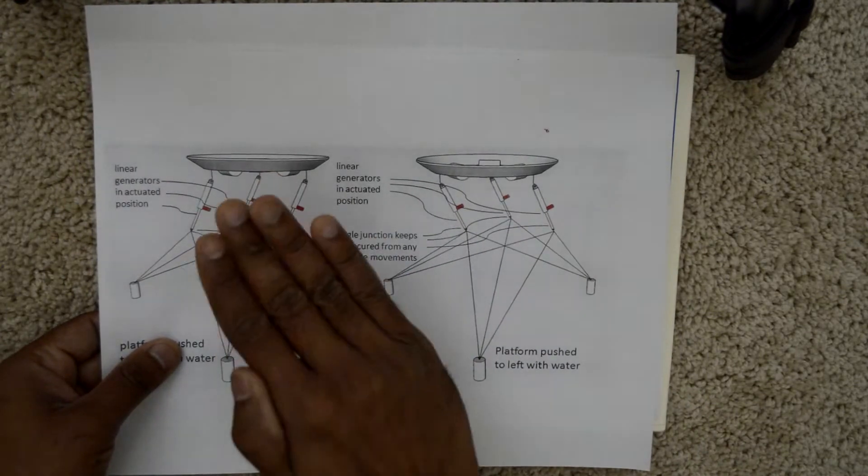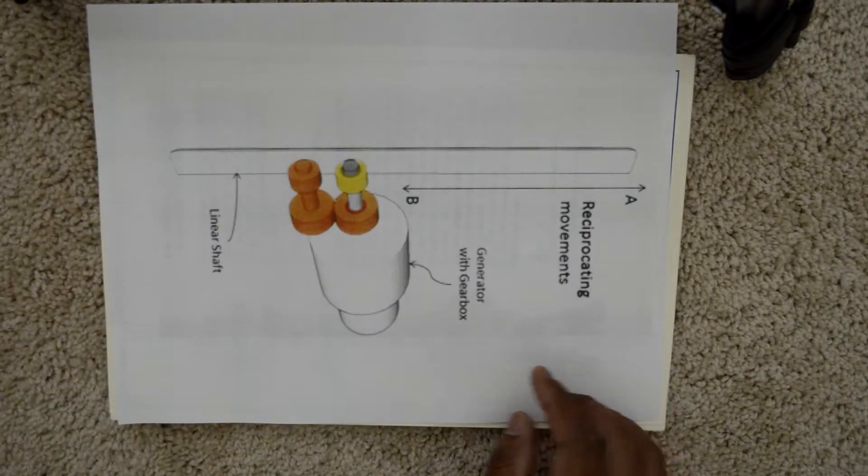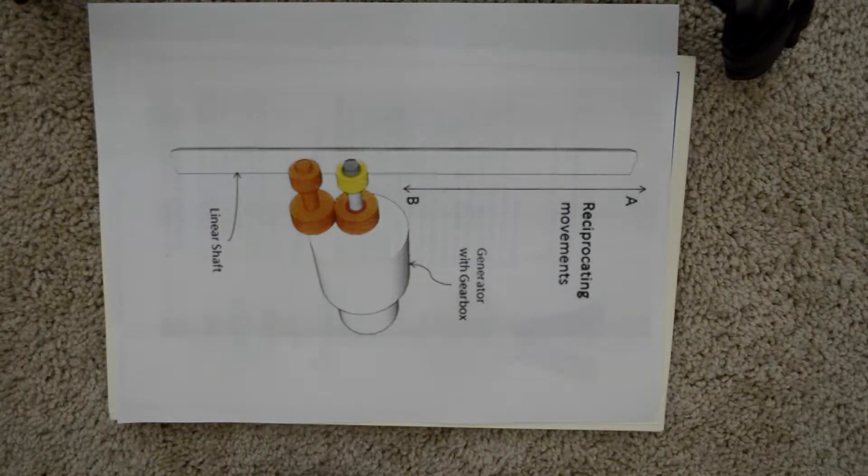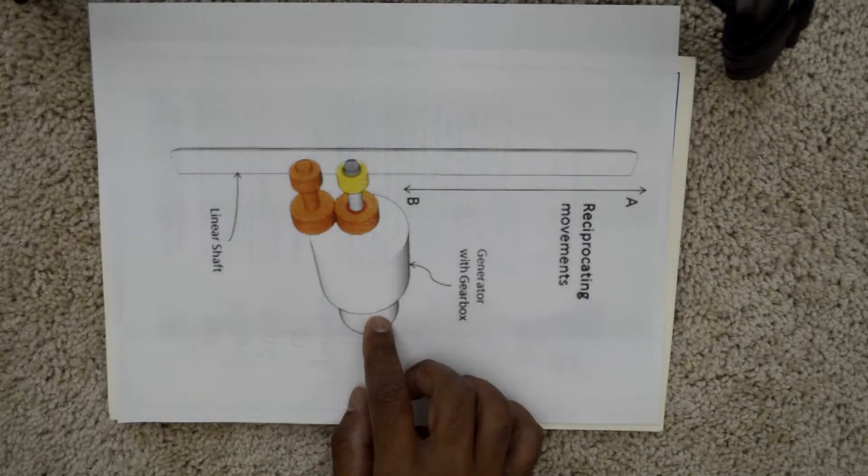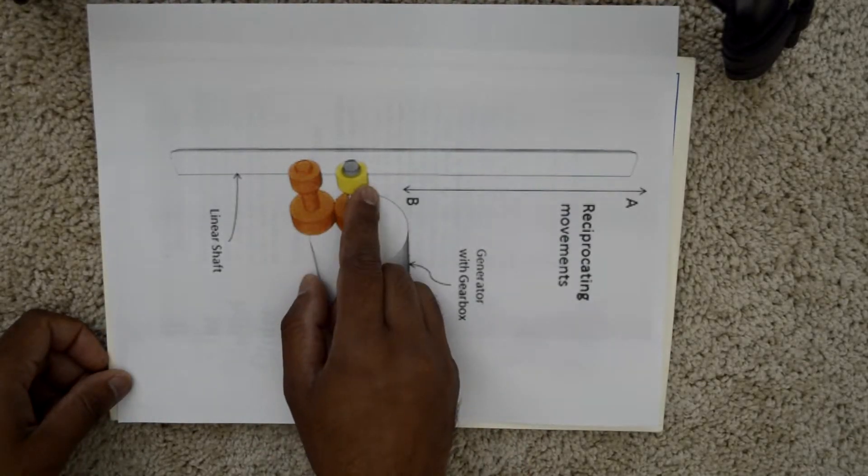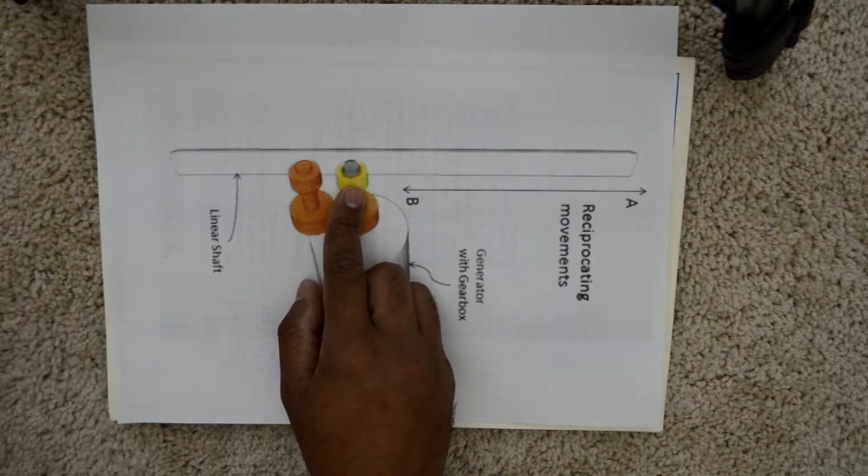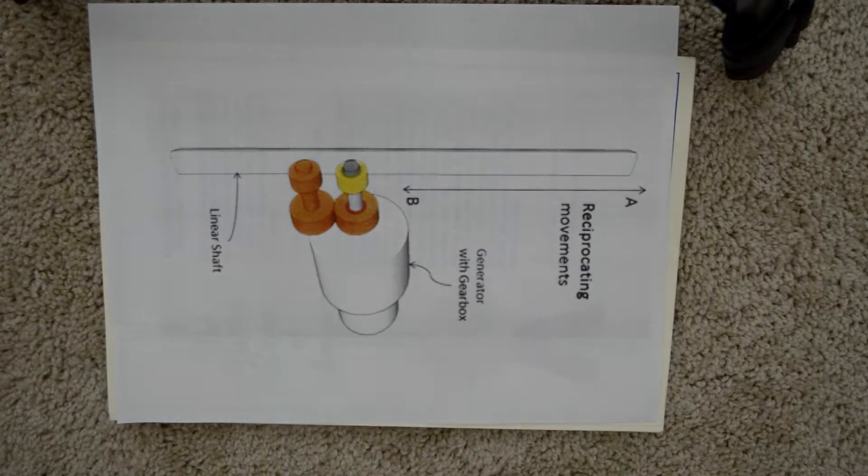If the entire system moves upward, it will pull all three. The linear generator I'll be using—I have a patent application filed for this—has multiple one-way clutches which spin the generator in one direction.